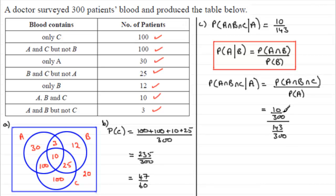If you were to multiply top and bottom by 300, you'd end up with ten, then, out of 143. So, you can see, obviously, we get the same answer.